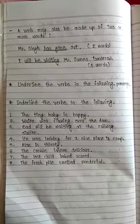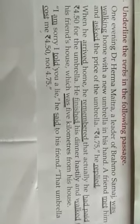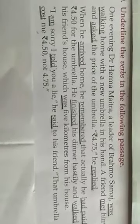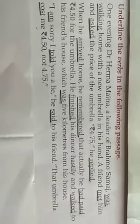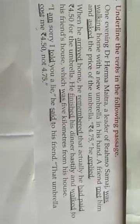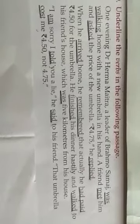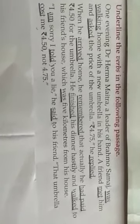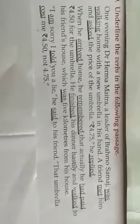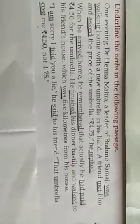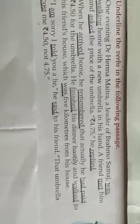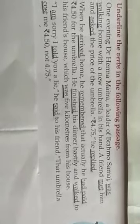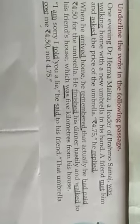Now we have an exercise: underline the verbs in the following passage. 'One evening, Dr. Herma Maitra, a leader of Brahmo Samaj, was walking home with a new umbrella in his hand. A friend met him and asked the price of the umbrella. Rupees 4.75, he replied.' In this passage: 'was walking' is a verb — 'walking' is the main verb and 'was' is a helping verb (auxiliary). 'Met' is an action of friend, so it is a verb. 'Asked' is a reporting verb. 'Replied' is also a reporting verb.